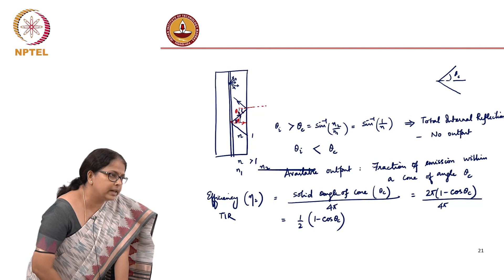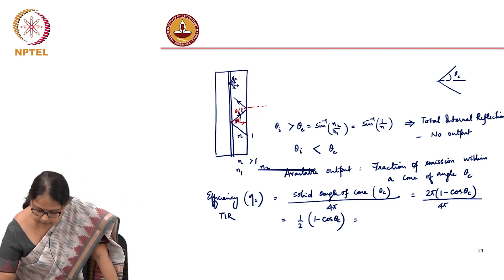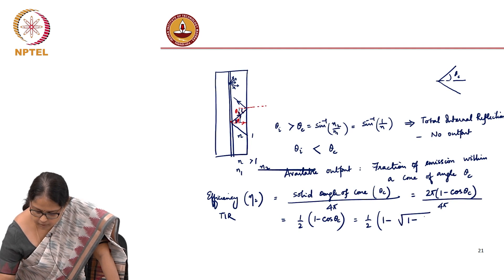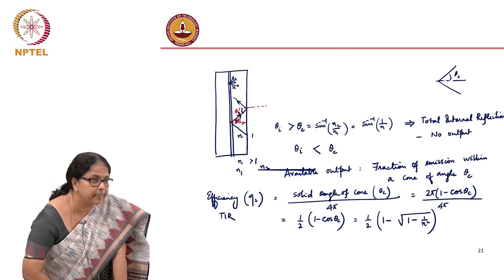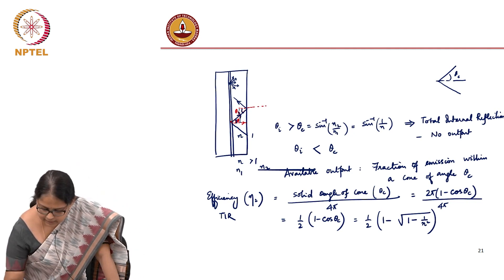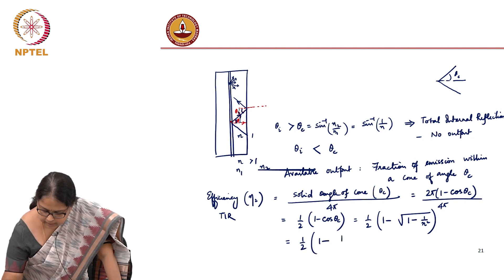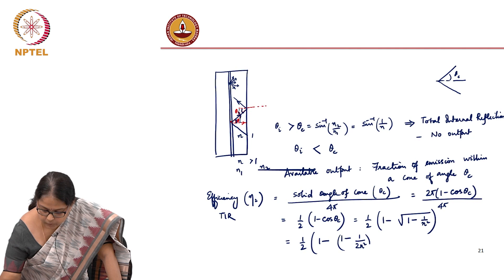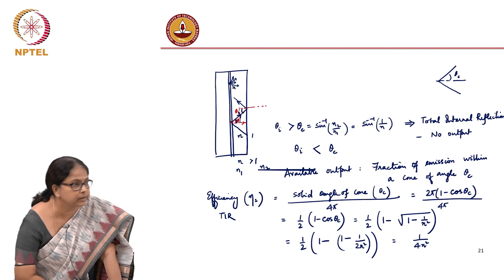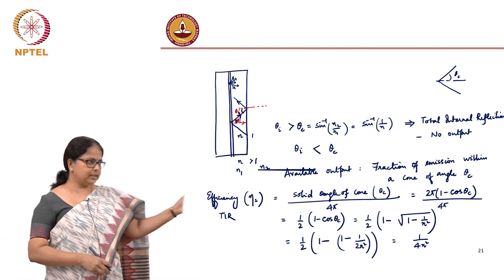I can express this in terms of refractive index because cos θ_c = √(1 − sin²θ_c) and sin²θ_c = 1/n². So I can write eta_2 as ½(1 − √(1 − 1/n²)). Running a Taylor expansion and taking one term, this becomes ½(1 − (1 − 1/(2n²))), which gives 1/(4n²). So this is the fraction of light available after accounting for total internal reflection — only this fraction escapes outside.